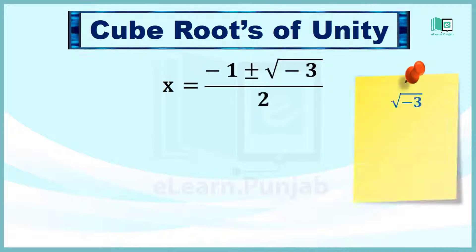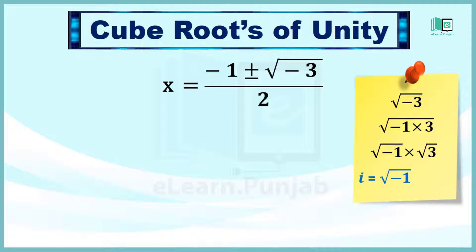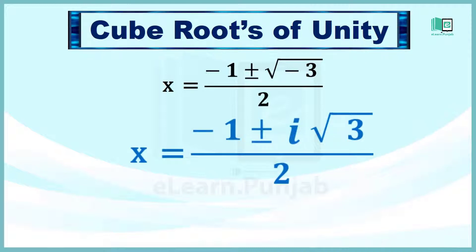क्योंकि under root minus 3 को under root minus 1 into 3, यानि under root minus 1 into under root 3 भी लिख सकते हैं। और under root minus 1, iota के बराबर होता है। इसलिए यह equation बन जाएगी: x is equal to minus 1 plus minus iota under root 3 over 2।